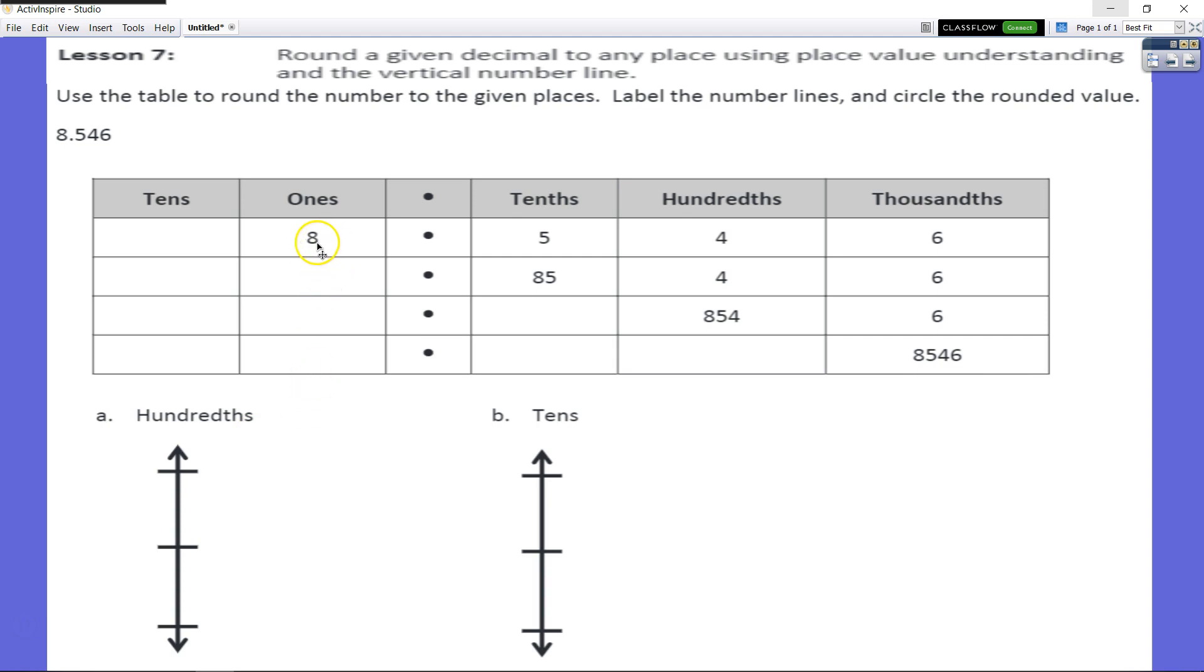So let's take a look here. Here is the first number the way it's written right up here. We have our ones place, we have eight ones, we have five tenths, we have four hundredths and six thousandths.